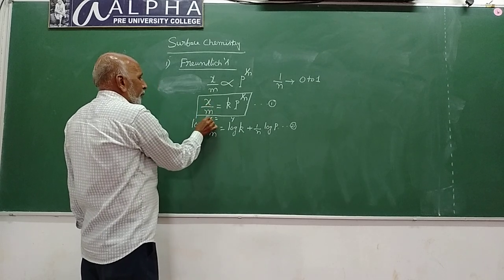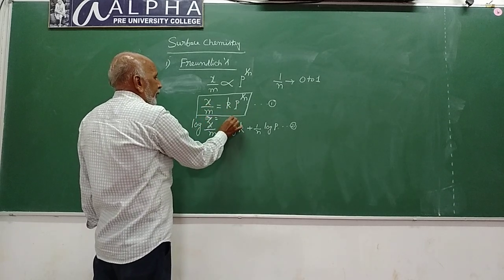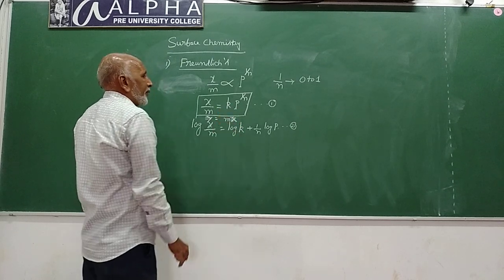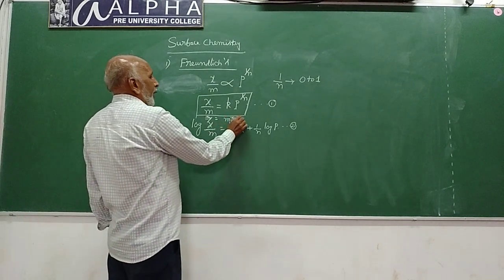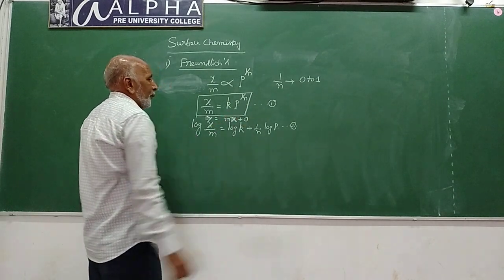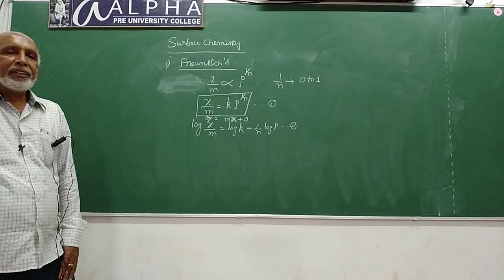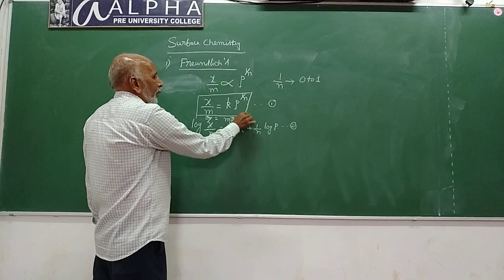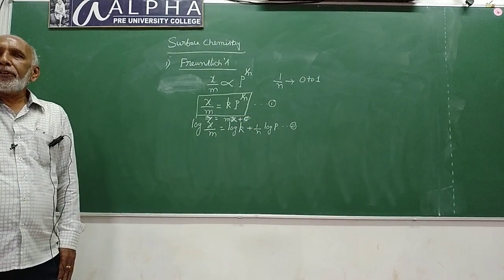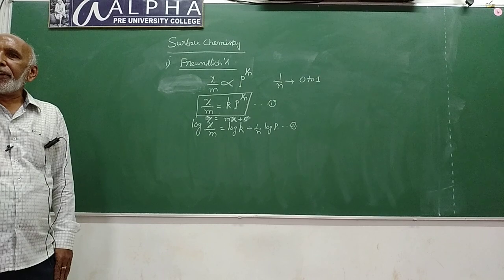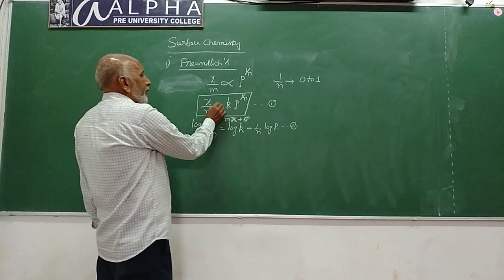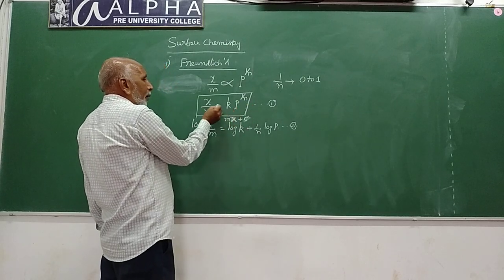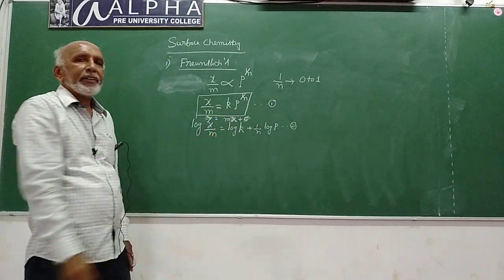You can identify log(x/m) as y, log p as x, log k as c, and 1/n as m, giving the form y = mx + c, which is the equation for a straight line. This means the Freundlich adsorption isotherm is in the form of a straight line equation.